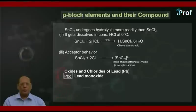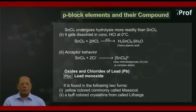So first compound in this sequence is PbO, known as lead monoxide. It is found in the following two forms. One, yellow colored, commonly called mesicot. Second, above colored crystalline form called litharge.